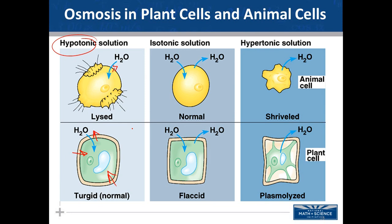In a hypertonic solution — think of cells placed into corn syrup — there are more solutes outside the cell than inside, so the net movement of water is out of the cell. An animal cell will shrivel. A plant cell will pull away from its cell wall — a process called plasmolysis. You can restore those cells by submerging them in an isotonic solution.